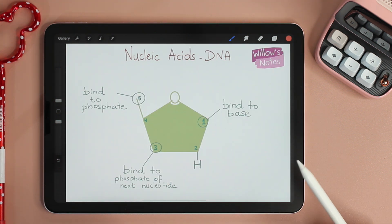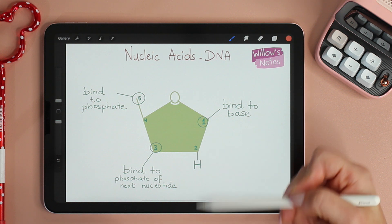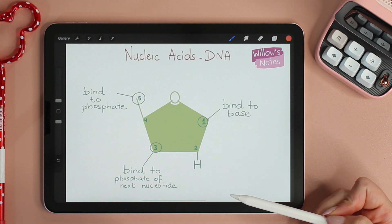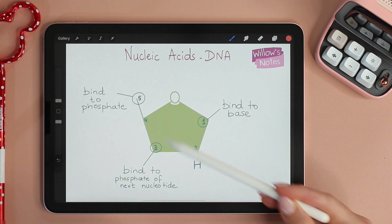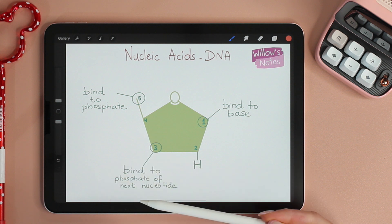Carbon number 1 binds to the nitrogenous base and we don't really need it to understand the directionality of DNA. What we do need to know are carbons number 3 and 5. Carbon number 5 binds to a phosphate group completing one nucleotide, while carbon number 3 will bind to the phosphate of the next nucleotide.